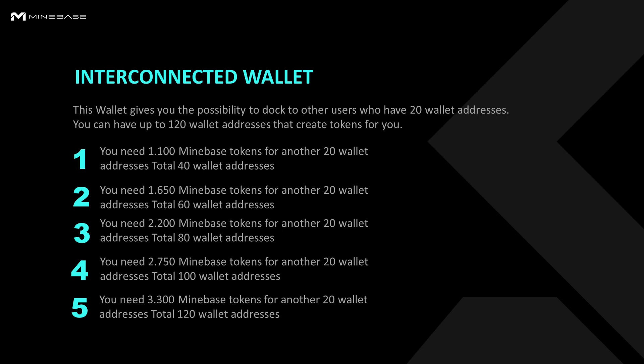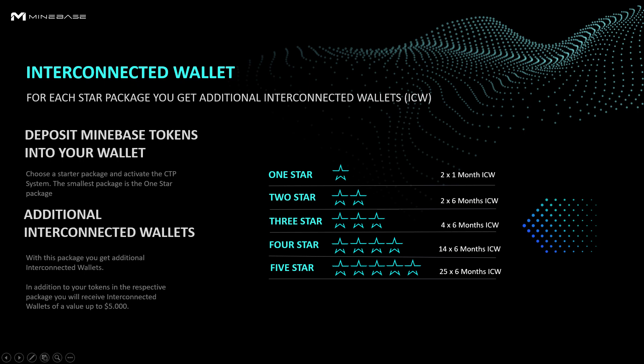With another 550 tokens, you can use two interconnected wallets, and so on. You have the possibility to add up to five interconnected wallets. With a starter package, you can get up to 120 wallet addresses if you deposit the given tokens. You will receive, in addition to your tokens in the respective package, a connected wallet of a value up to $5,000.